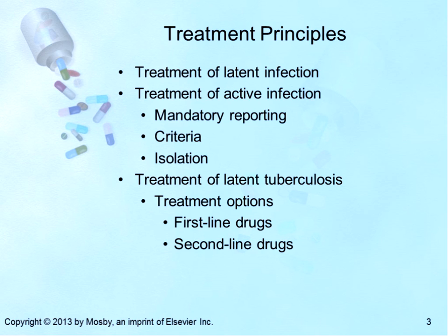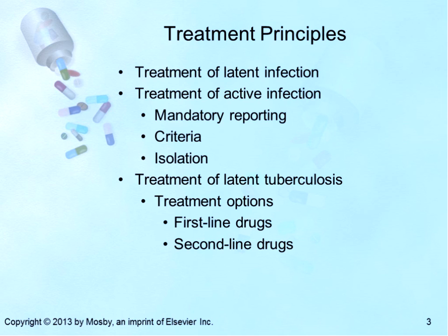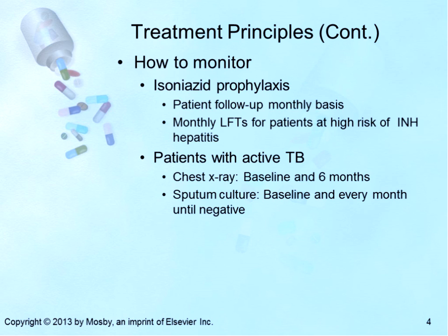First-line drugs are isoniazid and rifampin. Second-line drugs include cycloserine, streptomycin, levofloxacin, and moxifloxacin. Dispense one month's supply of medication at a time to monitor the patient monthly, ensure compliance, and check for adverse reactions. If the patient has been exposed to TB known to be resistant, consult the local health department for treatment recommendations. These patients are going to be seen by infectious disease first, and we'll be monitoring them throughout the course of therapy.